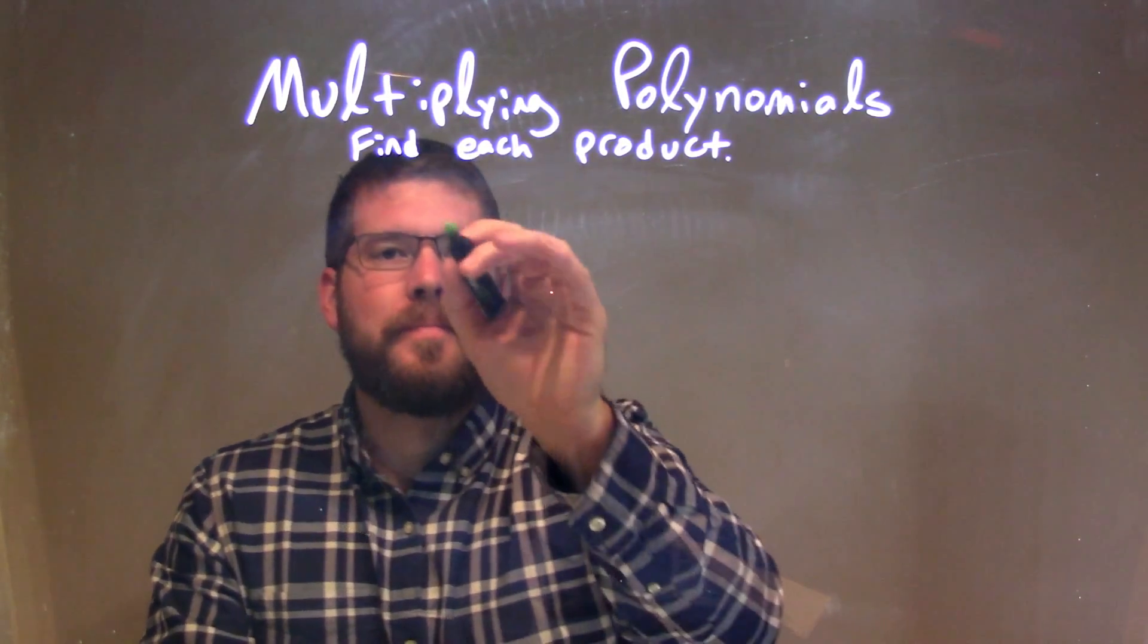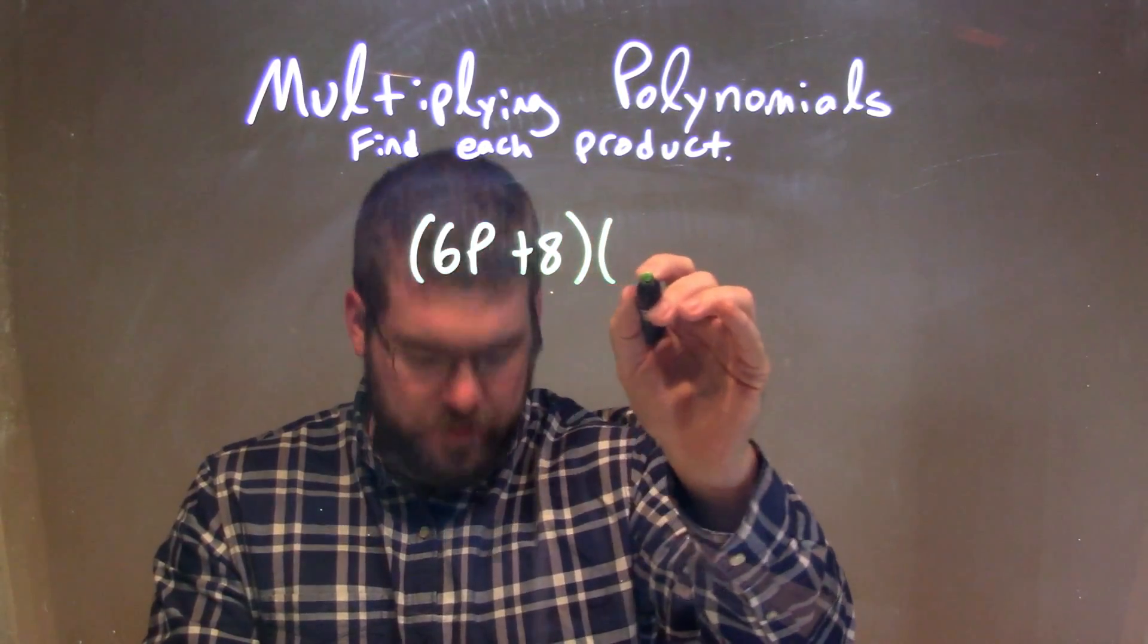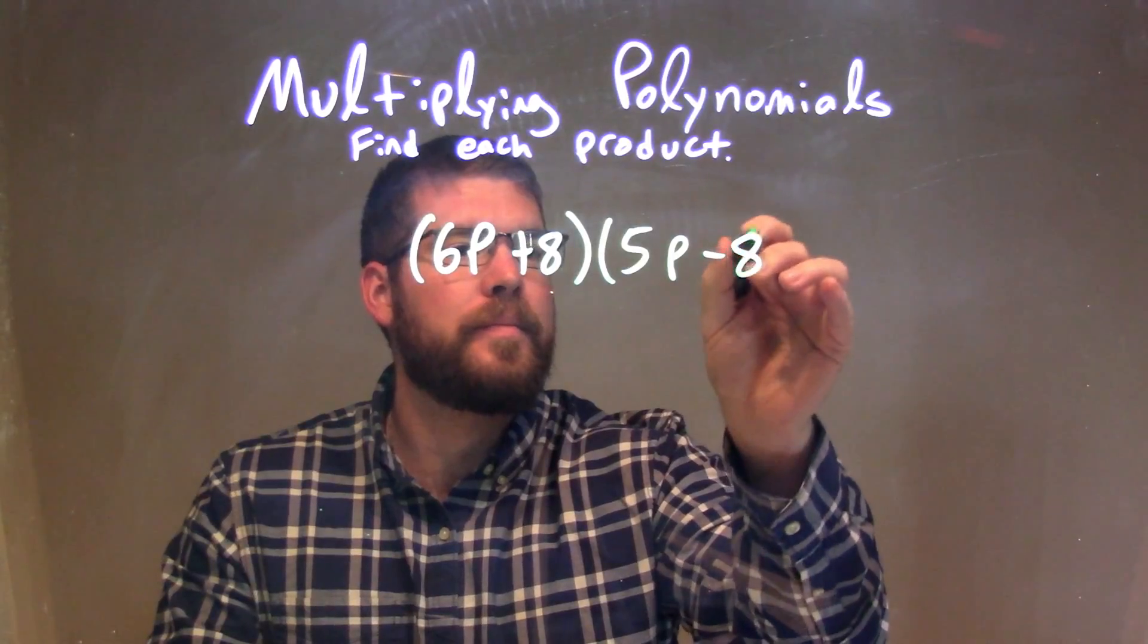So if I was given this problem: 6p plus 8 times my second parenthesis, 5p minus 8.